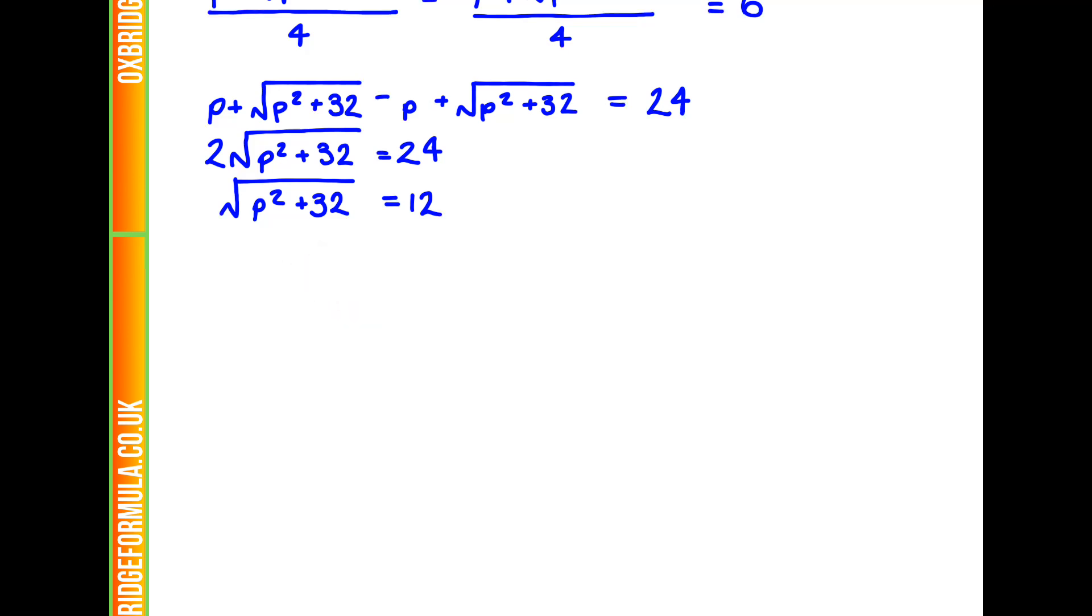We can then square it. We get p squared plus 32 is 144. Take away 32 from each side. p squared is 112. And then square root it. So, our p is the square root of 112.